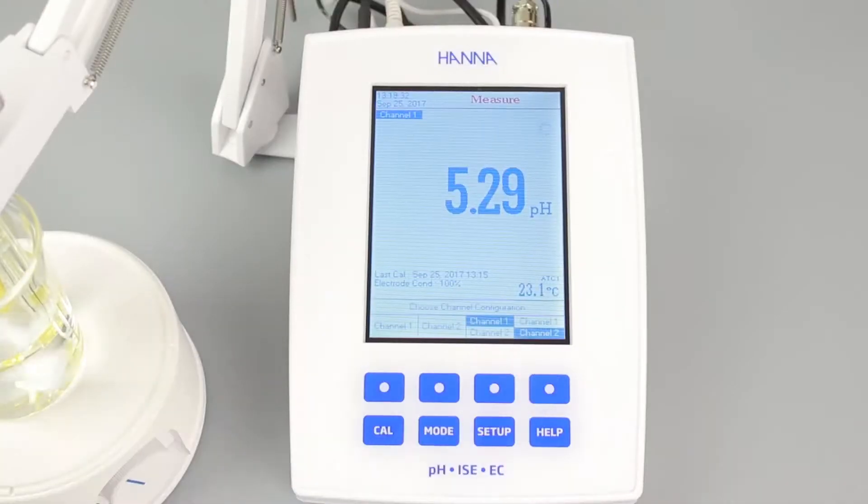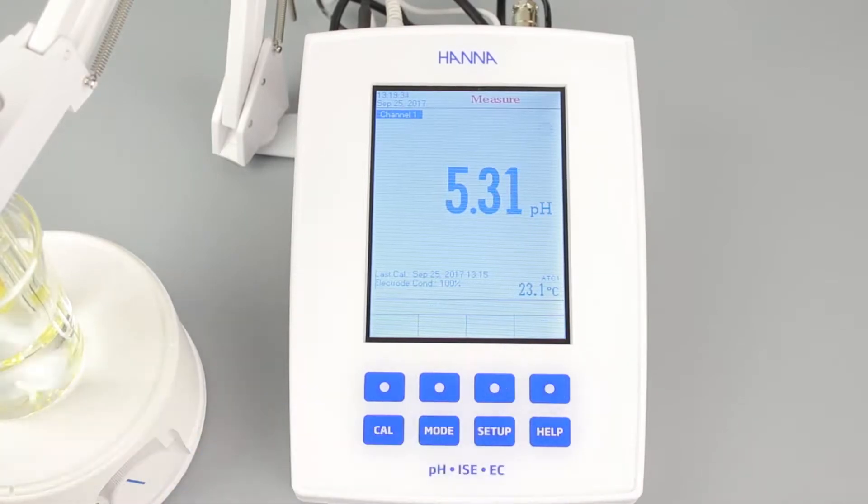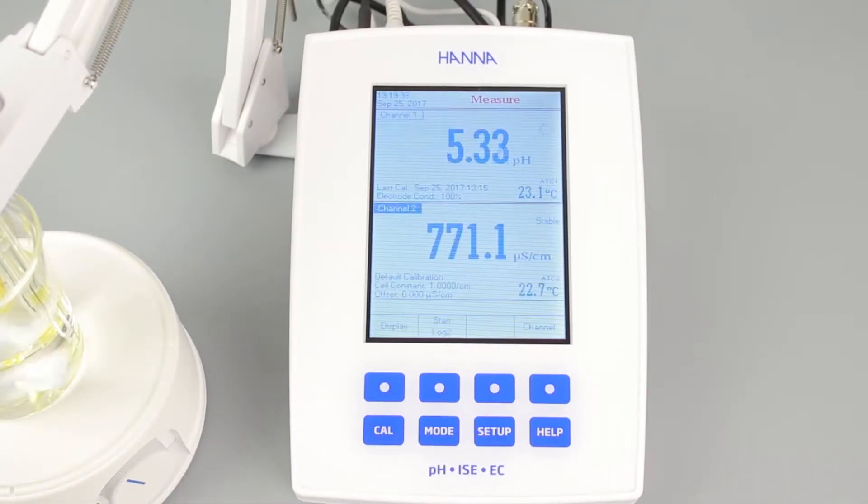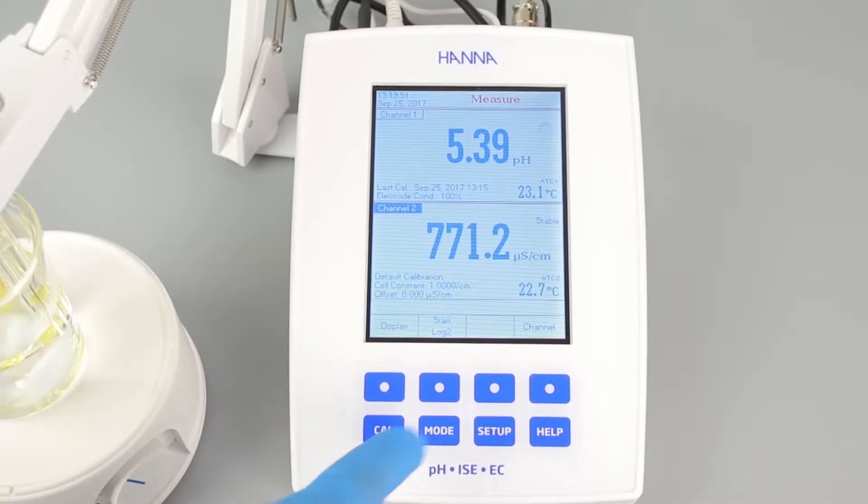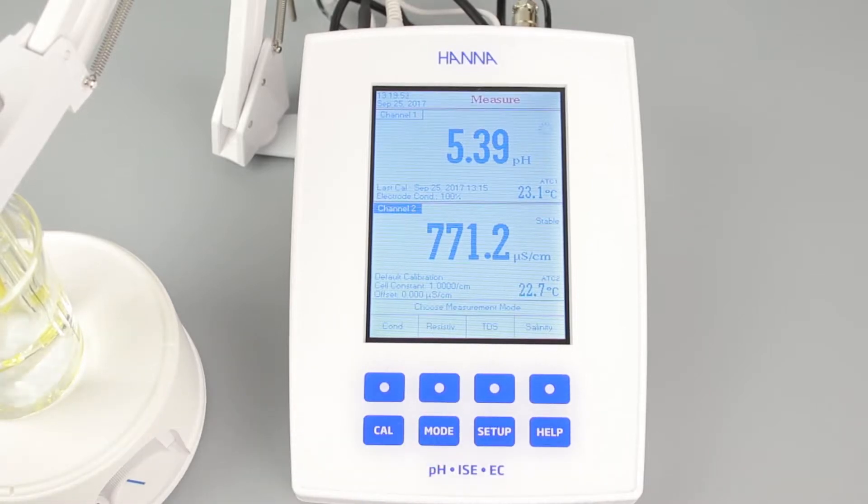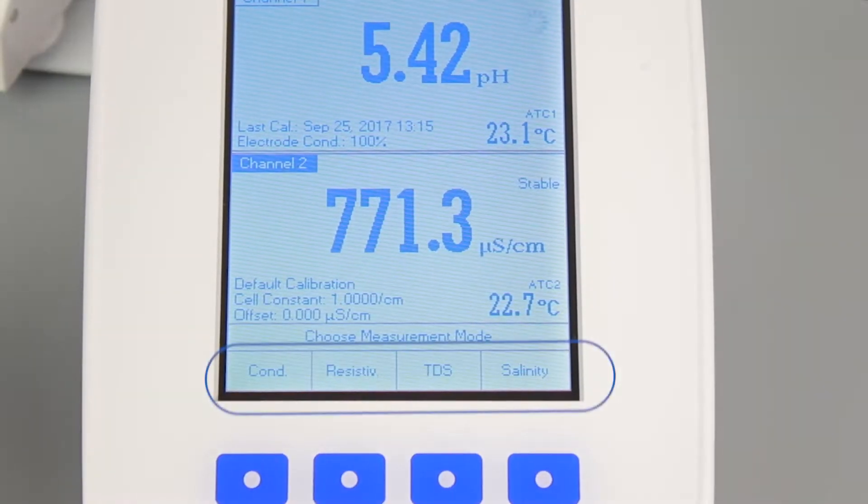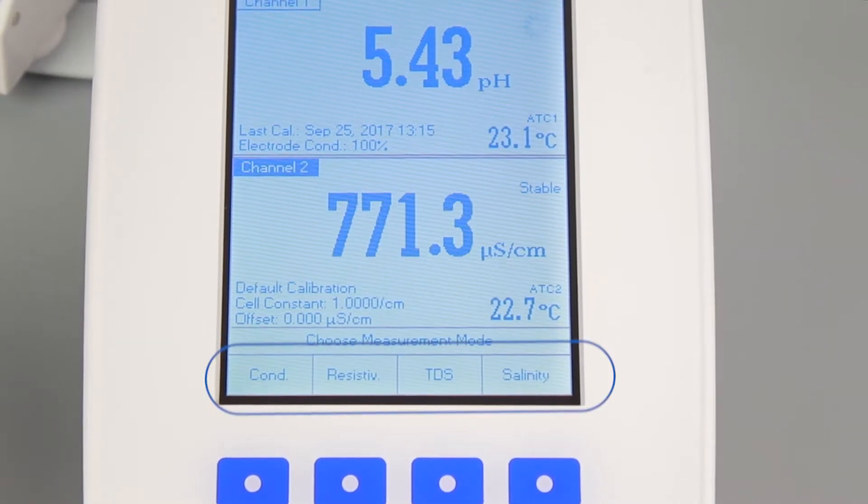Pressing channel and then one of the dual level display buttons will let you see both readings at once. When viewing EC in two-channel mode, press MODE again to switch between conductivity, resistivity, TDS, and salinity.